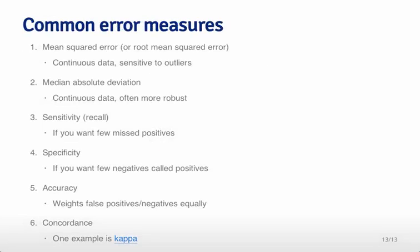Mean squared error and RMSE often don't work well when there are many outliers or variables on very different scales, because they are sensitive to those outliers — one really large value can raise the mean substantially. Instead, people often use the median absolute deviation: the median of the distance between the observed value and the predicted value, using absolute value instead of squaring. This is more robust to the size of those errors.